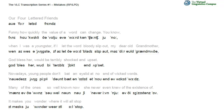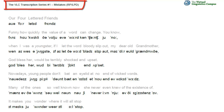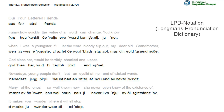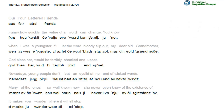Welcome to our video series concerned with linguistic data analysis. Here you see one of our students' solution to a phonemic transcription exercise — exercise number one from the VLC transcription series. The task was to transcribe the text shown here, represented in grey, using the LPD notation, that is, the notation in the Longman's Pronouncing Dictionary. The reference variety of English was Received Pronunciation.